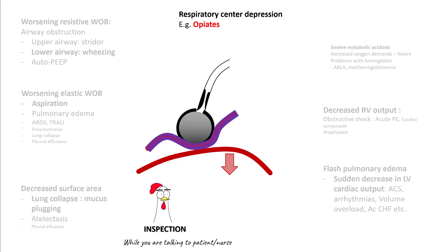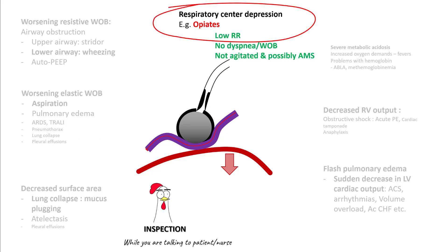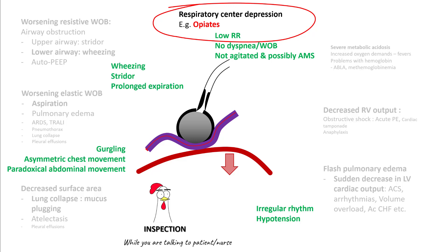While you are talking to the patient, you are also inspecting them. The most important thing you are looking for is how they are breathing. Most patients with hypoxemia will be in respiratory distress, working hard to breathe. However, in patients with respiratory center depression, the respiratory rate would be low, there would be no dyspnea or work of breathing, they would not be agitated, and possibly be altered. Look at their vital signs and make sure they are not hypotensive. Also observe for any wheezing or stridor, and look for any asymmetrical chest movement or paradoxical abdominal movement.